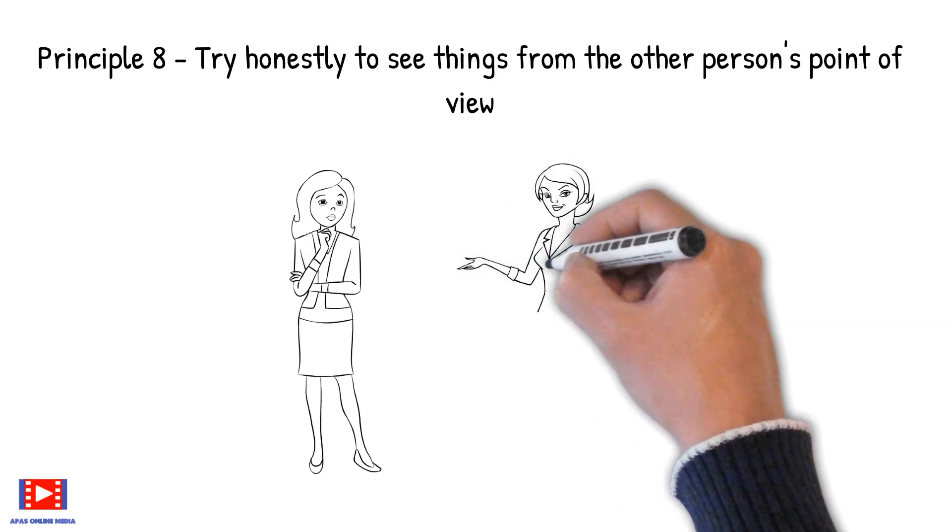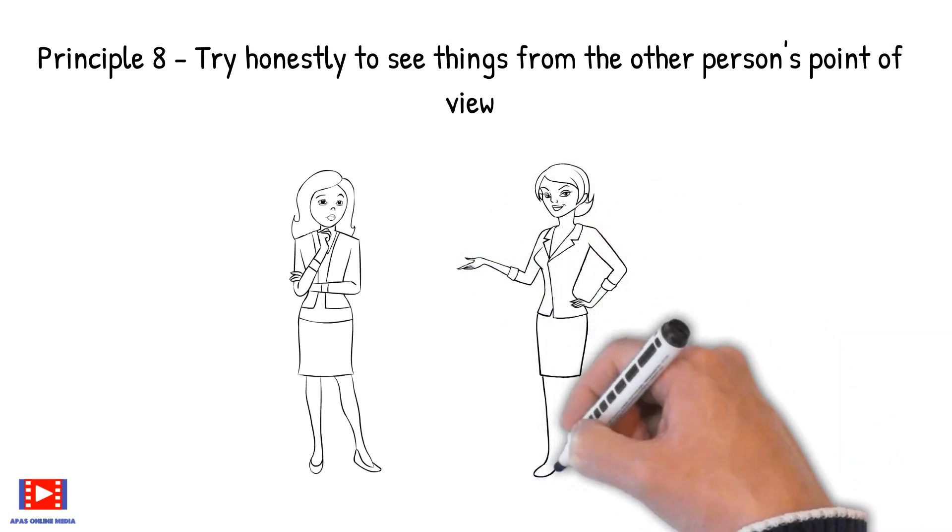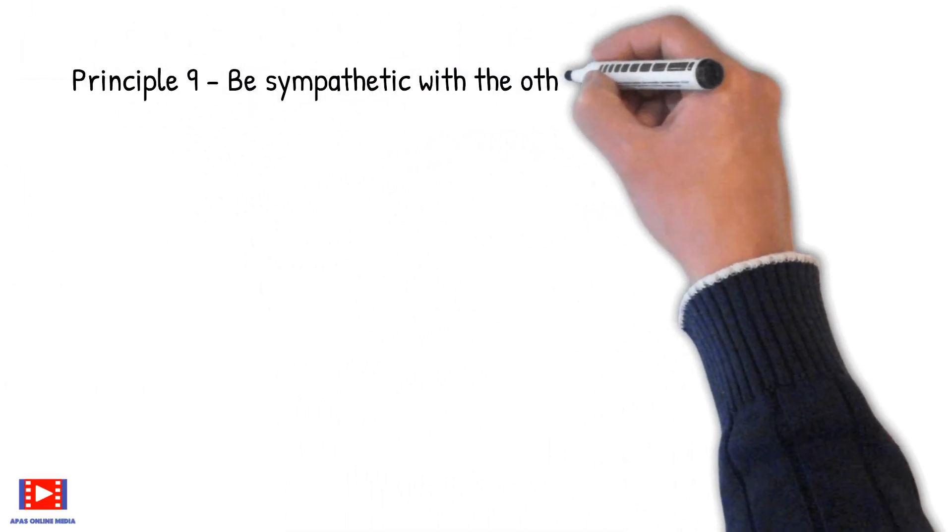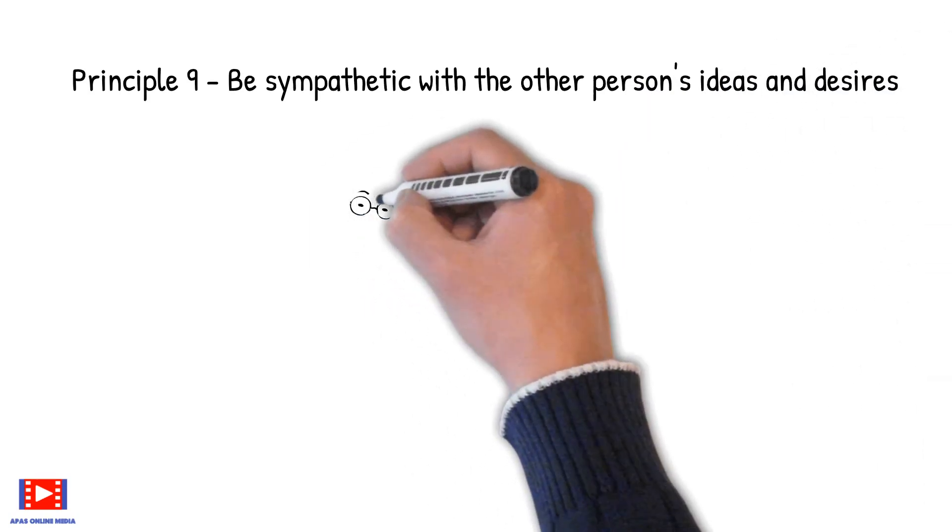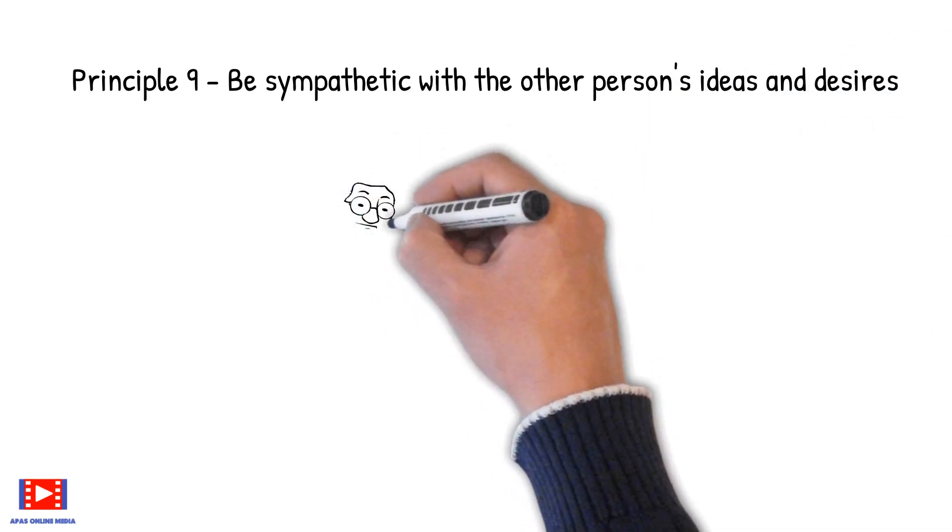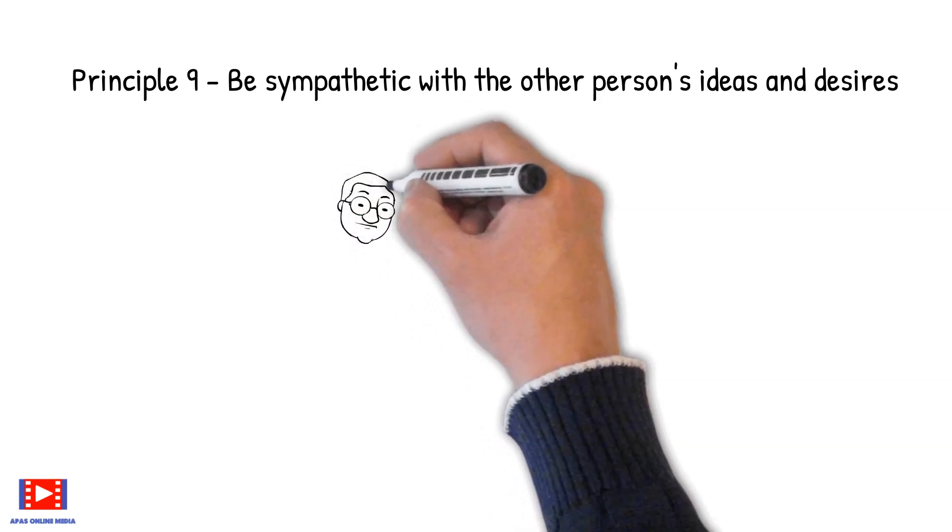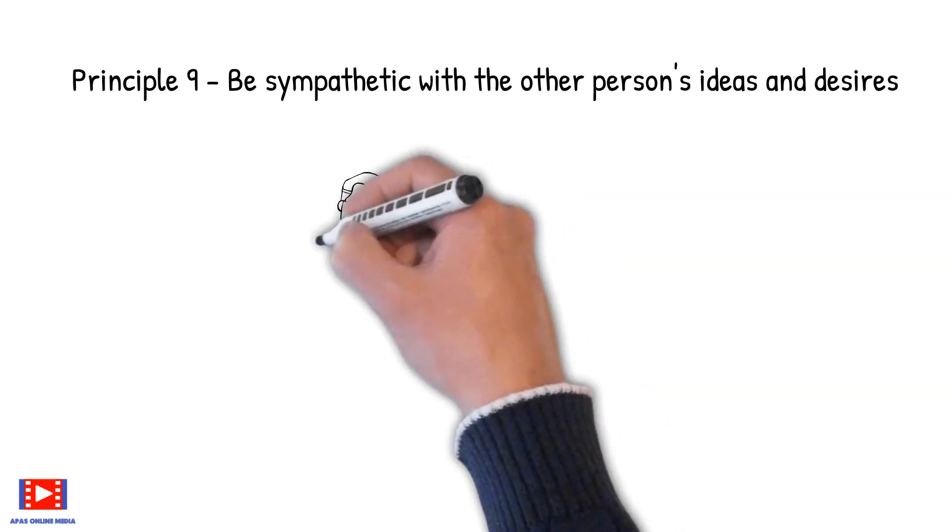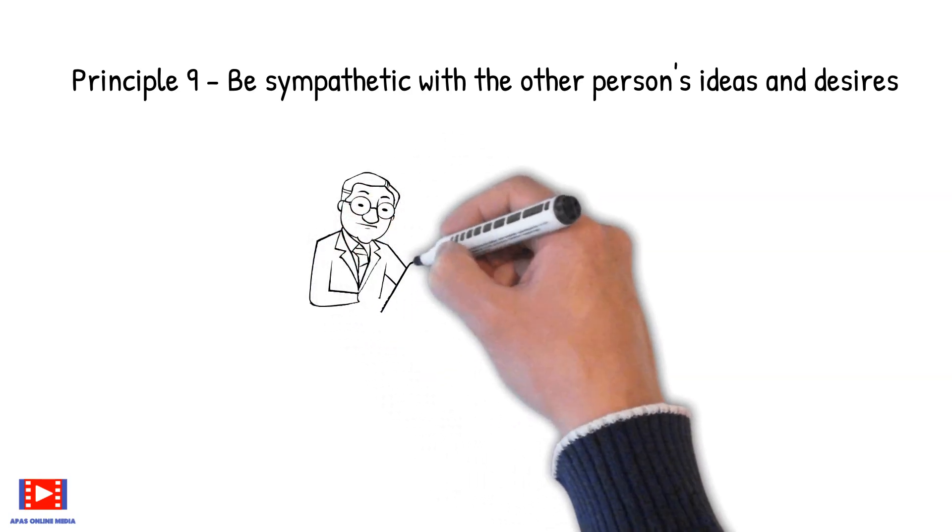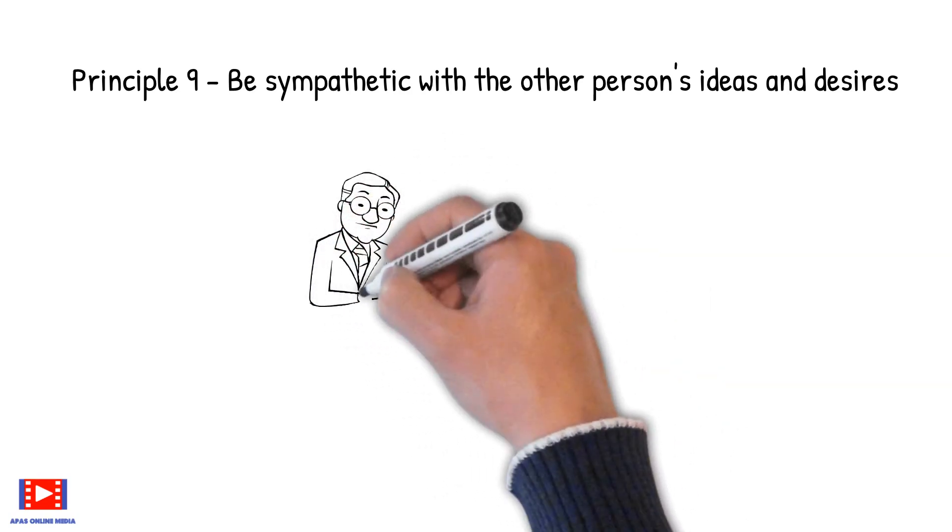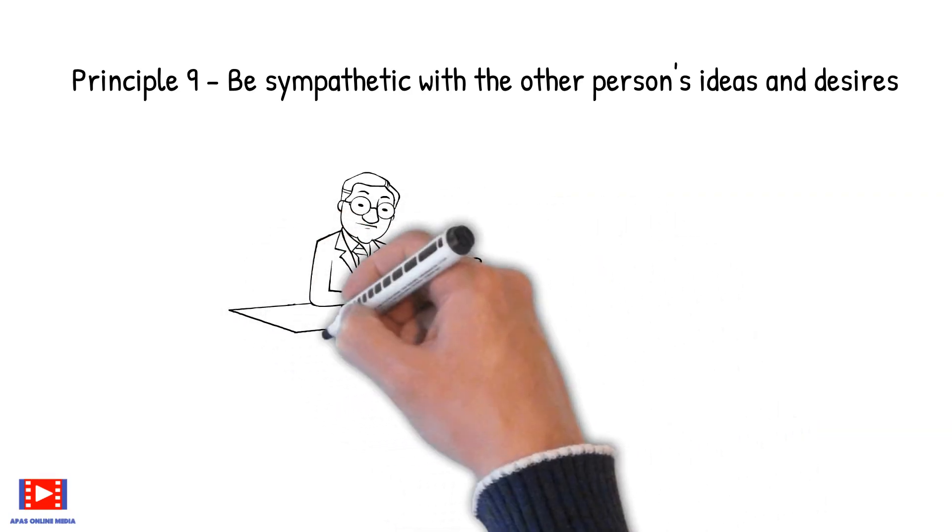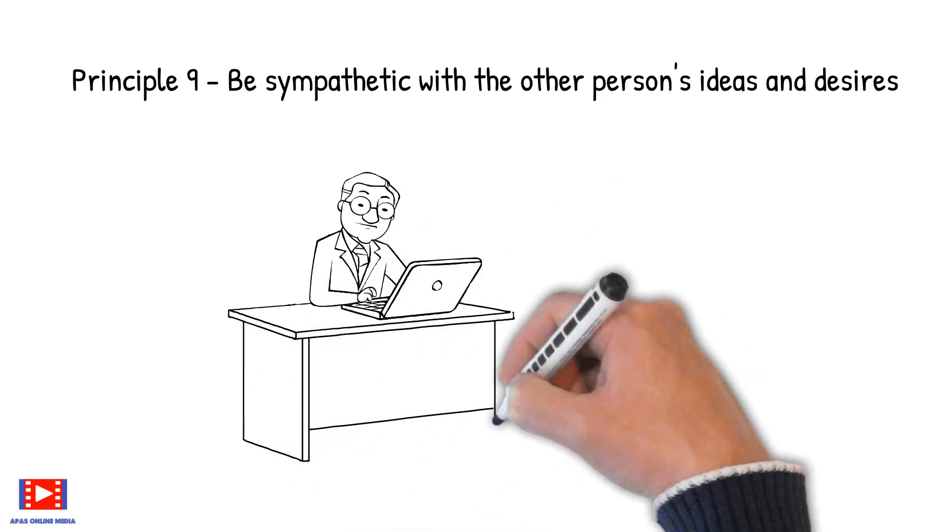Principle 9: Be sympathetic with the other person's ideas and desires. Wouldn't you like to have a magic phrase that would stop all arguments, eliminate ill feelings, create goodwill and make the other person listen attentively? It is: I don't blame you one iota for feeling as you do. If I were you.